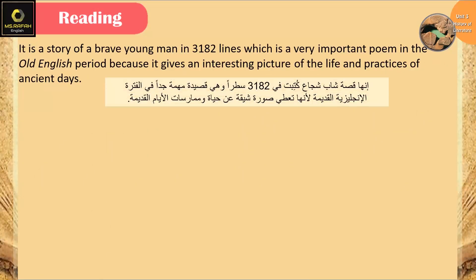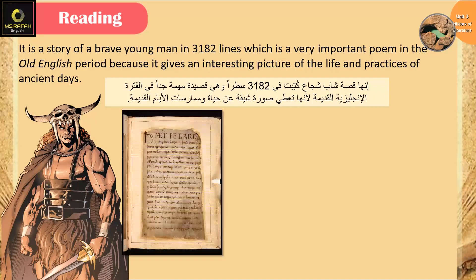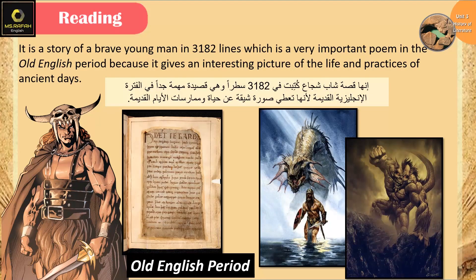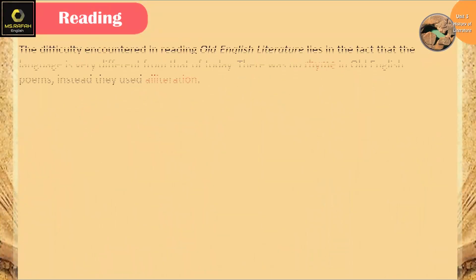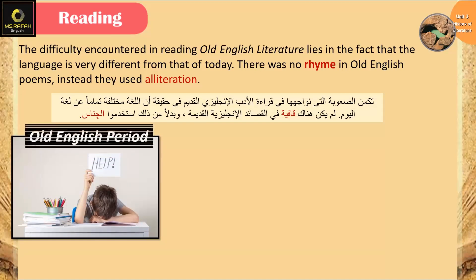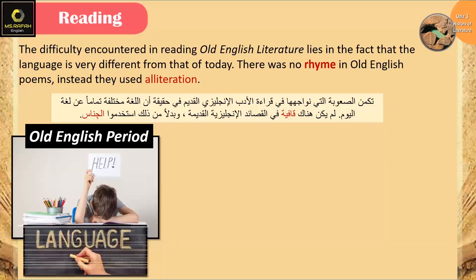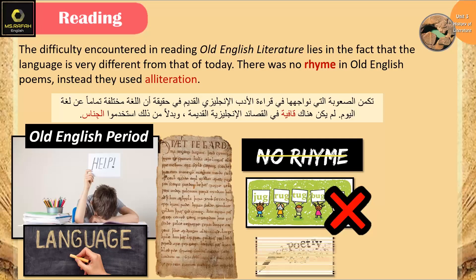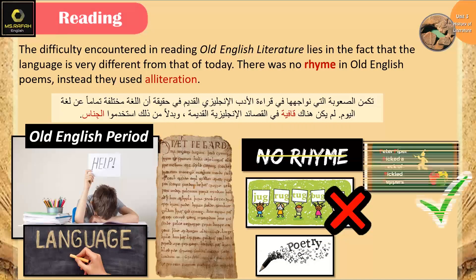Beowulf is a story of a brave young man in 3,182 lines. It is a very important poem in the Old English period because it gives an interesting picture of the life and practices of ancient days. The difficulty in reading Old English literature lies in the fact that the language is very different from that of today. There was no rhyme in Old English poems; instead, they used alliteration.